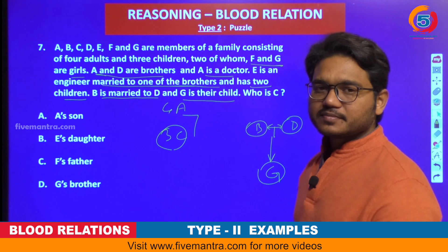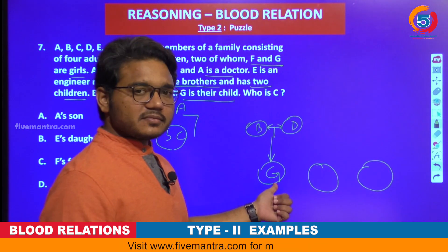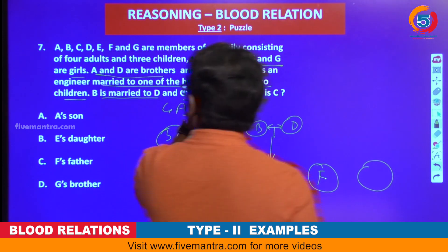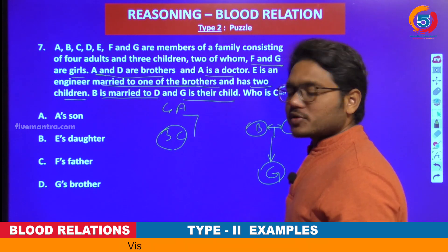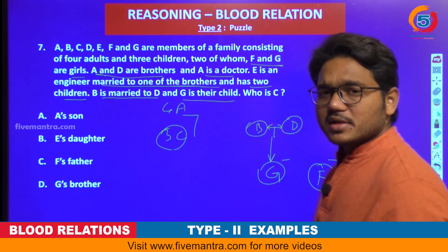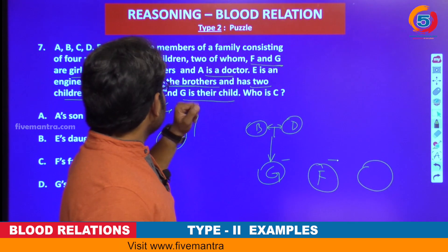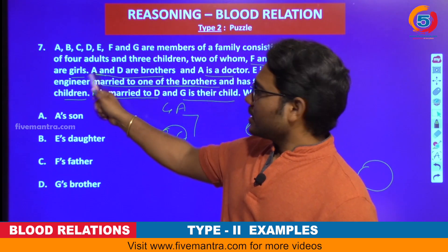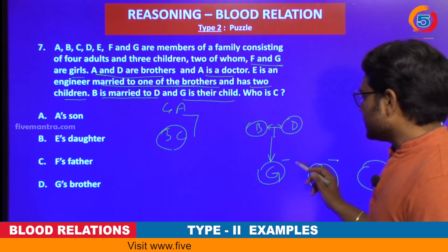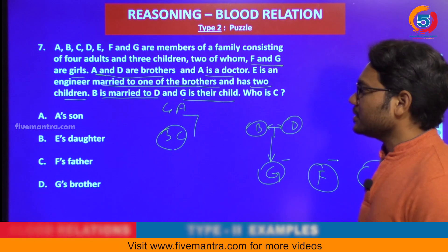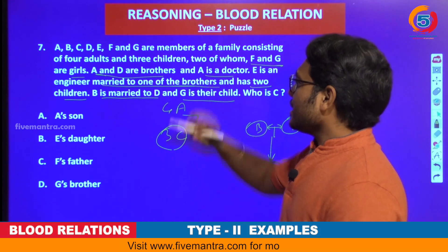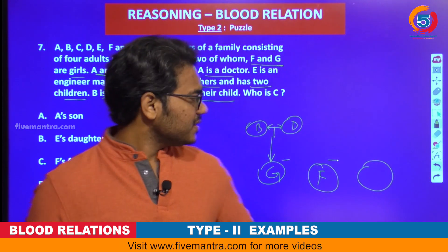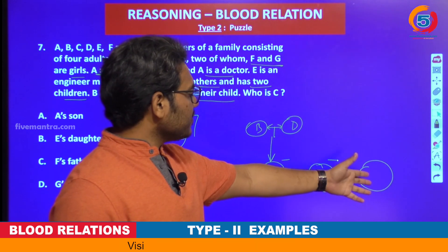Three children — two of whom are F and G. We already found G, and one more child is F according to this statement. F and G are girls — so gender is also given. These two are girls. We need to locate the third child still, and we don't know that person yet. One more person we need to place.